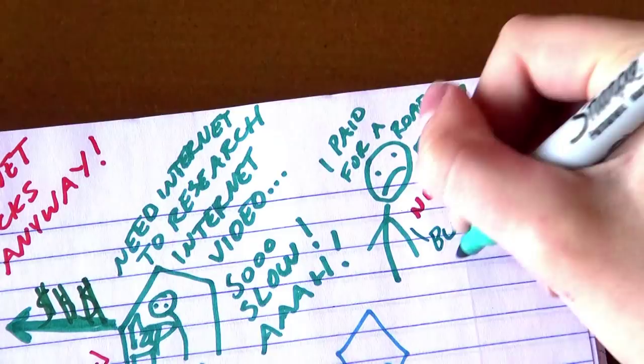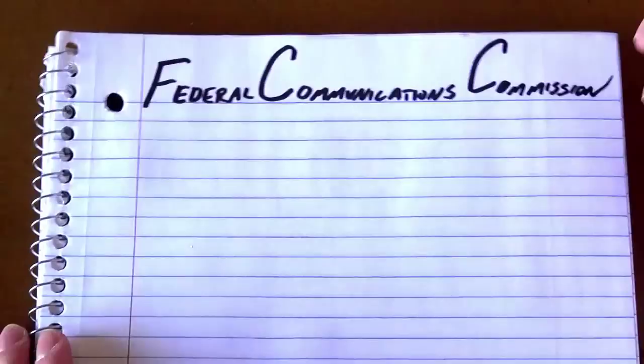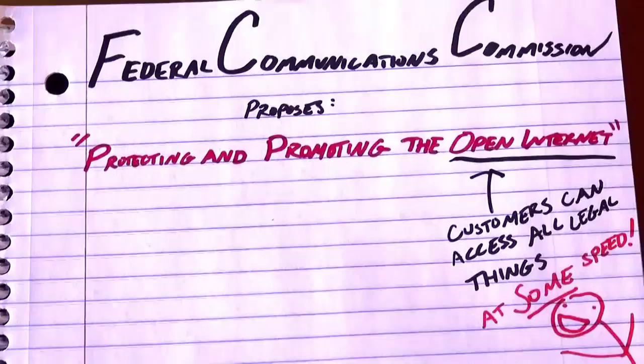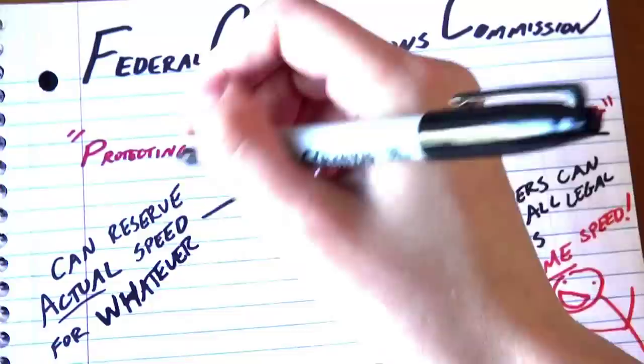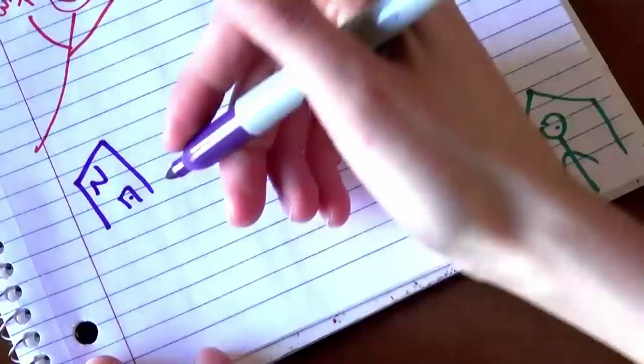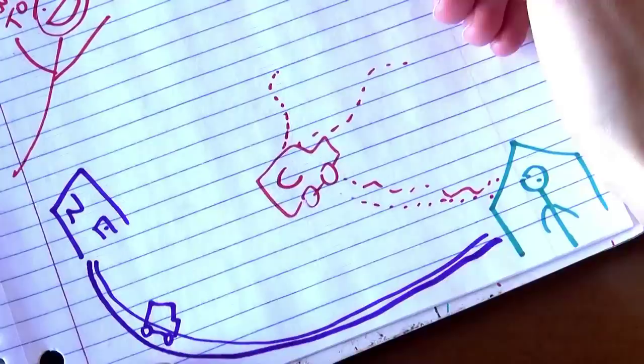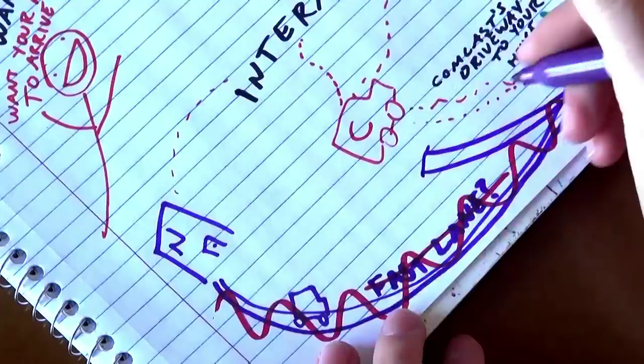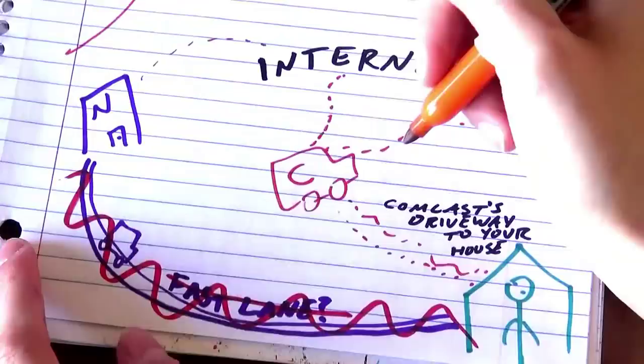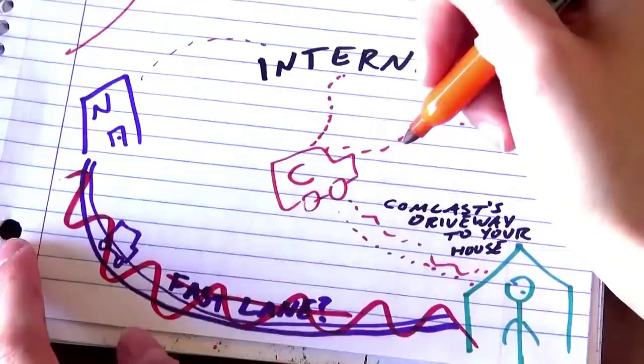Here's the officially proposed rule the FCC is considering: Internet service providers must offer some amount of access to all legal internet things, but they can offer a fast lane to certain content providers. This sounds like maybe Comcast and Netflix collaborate to put in a special cable all the way from Netflix right to your home to get super fast Netflix service. But that's not what this fast lane is. It's not even a nice new paved driveway.